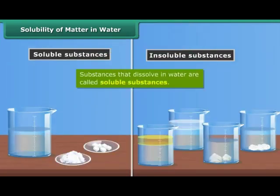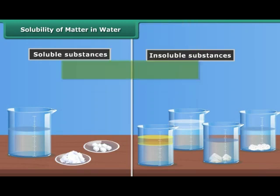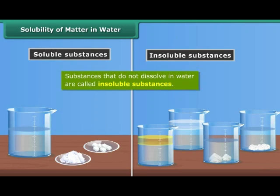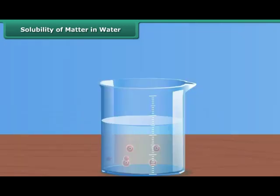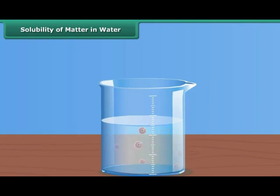Substances that dissolve easily in water are called soluble substances. Substances that do not dissolve in water are called insoluble substances. Some gases are also soluble in water, such as oxygen. Oxygen dissolved in water helps aquatic animals survive.